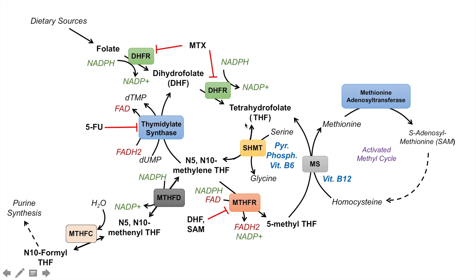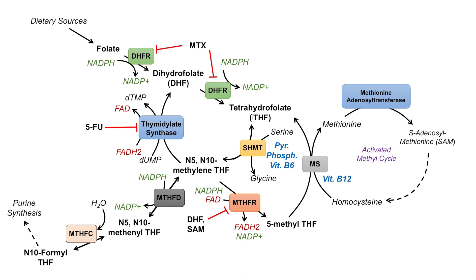The second direction is that N5,N10-methylene tetrahydrofolate can be recycled back into dihydrofolate by thymidylate synthase to produce dTMP. Third, it can go toward the activated methyl cycle: we produce 5-methyl tetrahydrofolate by MTHFR, and this can be utilized in the activated methyl cycle if the cell needs SAM. Fourth, it can go toward the production of N5,N10-methenyl tetrahydrofolate, then N10-formyl tetrahydrofolate, and eventually purine synthesis if the cell needs it.